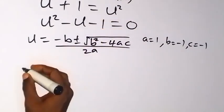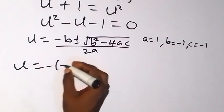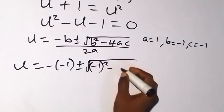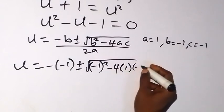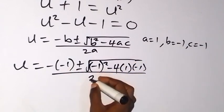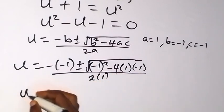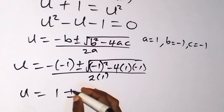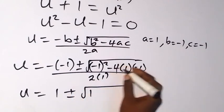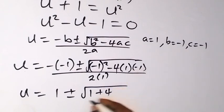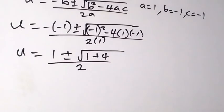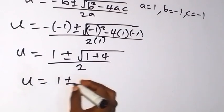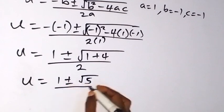When we substitute, we have u equals negative of negative 1, plus or minus the square root of negative 1 squared minus 4 times 1 times negative 1, all over 2 times 1. Simplifying: 1 plus or minus the square root of 1 plus 4, all over 2. So u equals 1 plus or minus the square root of 5, over 2.